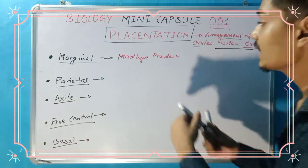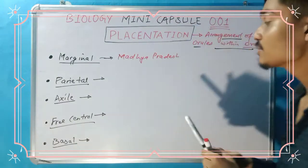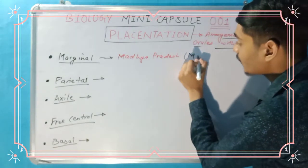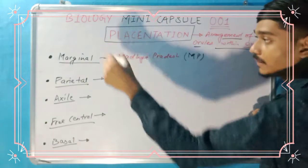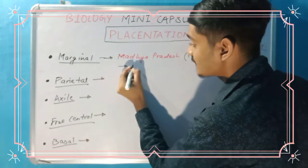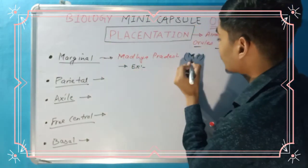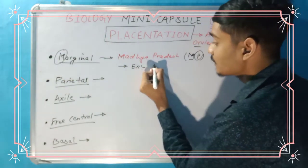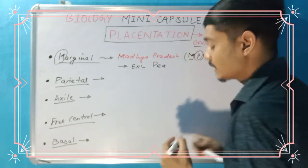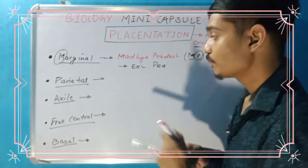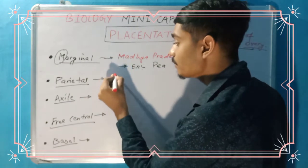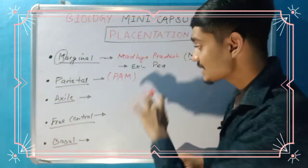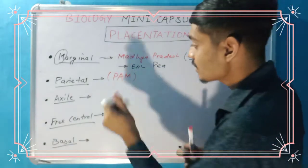First is marginal — that is P. The second one is parietal. So this gives us P, A, M. This is the standard mnemonic — it's very standard and very easy. And this is the example.